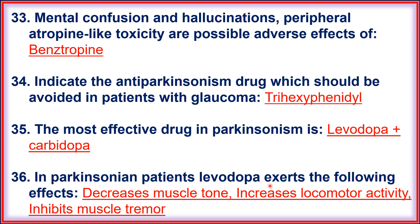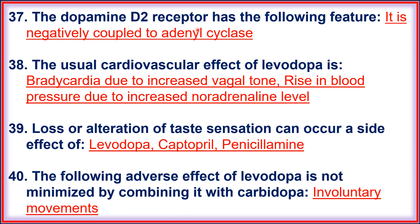Question thirty-six: in Parkinsonian patients, levodopa decreases muscle tone, increases locomotor activity, and inhibits muscle tremor. Question thirty-seven: the dopamine D2 receptor is negatively coupled to adenylyl cyclase. Question thirty-eight: the notable cardiovascular effect of levodopa is bradycardia due to increased vagal tone and rise in blood pressure due to increased noradrenaline levels. Question thirty-nine: loss or alteration of taste sensation can occur as a side effect of levodopa, captopril, and penicillamine. Question forty: the adverse effect of levodopa not minimized by combining it with carbidopa is involuntary movement.